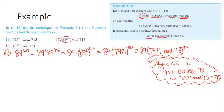As we go through this problem, I'll just assume you know how to do those mod operations and will write down the results as I go. This is going to be 89 times 78 to the 153. Let's keep going since this is still not a manageable size — the exponent is still way too big.